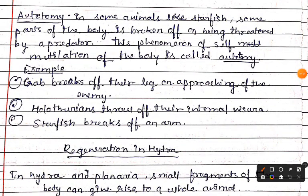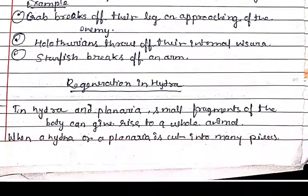Autotomy refers to a phenomenon where in some animals like starfish, crabs, and lizards, some body parts break off when threatened by a predator. In lizards, the tail detaches to confuse the predator. In crabs, the leg or appendages are removed. In holothurians, internal viscera are expelled. In starfish, autotomy of arms occurs. This is used as a defense mechanism to escape from predators.